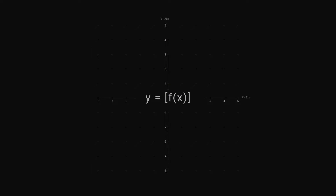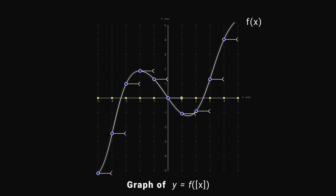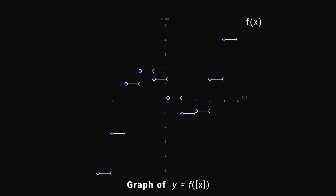What will happen when these brackets coincide? When this happens, mark all the integers on the x-axis and draw vertical lines until they intersect the graph. Then draw these horizontal line segments from the point to its right-hand side, and we get our required graph.